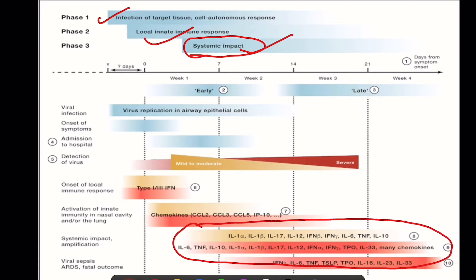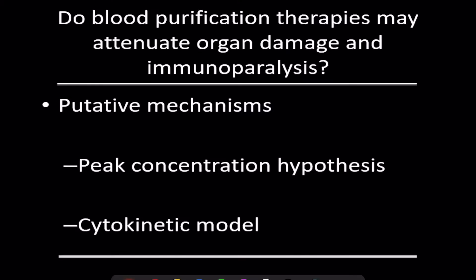What we are trying to do is clear these cytokines from the blood, thereby reducing the systemic impact of the disease and preventing the fatal outcome in patients who develop a cytokine storm. Blood purification therapy can attenuate organ damage and immune paralysis.